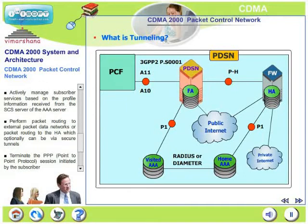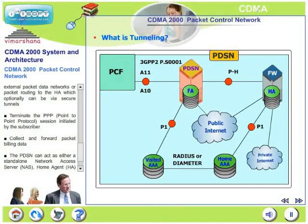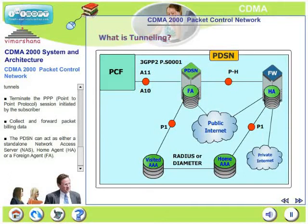PDSN actively manages subscriber services based on profile information received from the SCS server, performs packet routing to external packet data networks or to the home agent, optionally via secure tunnels. PDSN terminates the point-to-point protocol sessions initiated by subscribers, collects and forwards packet billing data, and can act either as a standalone network access server, a home agent, or a foreign agent.